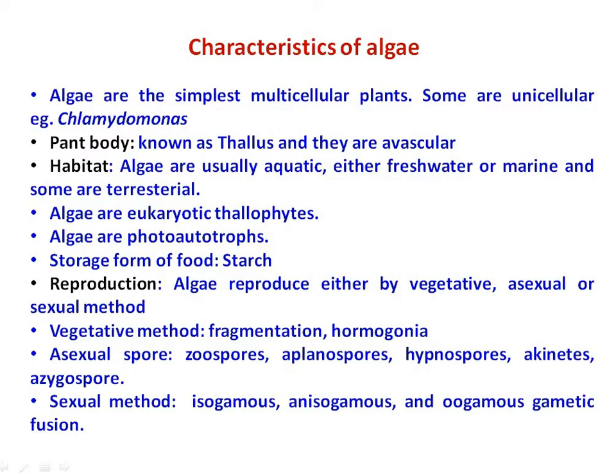Algae are usually aquatic — they may be either freshwater or marine — and some algae are terrestrial also. Algae are mostly eukaryotic, but some algae are prokaryotic also. Algae are photo-autotrophs, meaning they can synthesize their own food. The reserved food material of algae is starch. The reproduction of algae mainly takes place by three methods: vegetative method, asexual method, and sexual method.